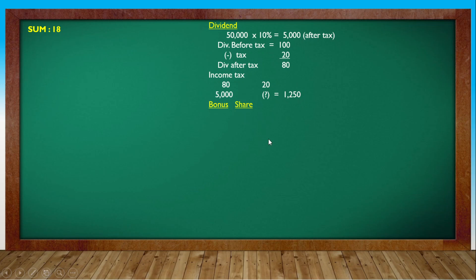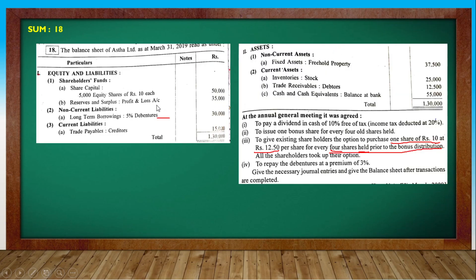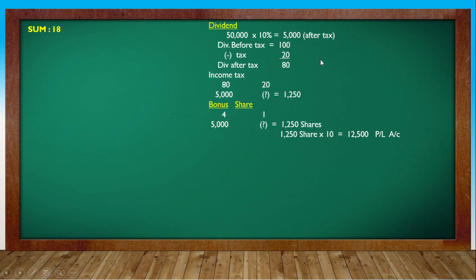Now let's talk about bonus shares. For right shares, prior to bonus distribution - 5,000 shares divided by 4 equals 1,250 right shares. 1,250 shares at ₹10 each equals ₹12,500. For reserves - P&L account - this is limited. So: ₹5,250 plus ₹6,250 for dividend, tax ₹1,250. Now let's talk about bonus and right shares.